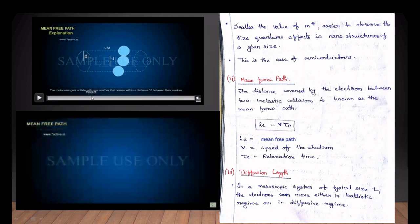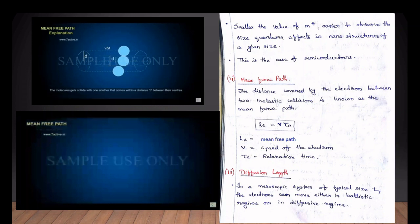The last collision leads to the relaxation time. This means the mean free path. The de Broglie wave relates to the mean free path. Now the third one is diffusion, which is the most relevant for the mesoscopic system.